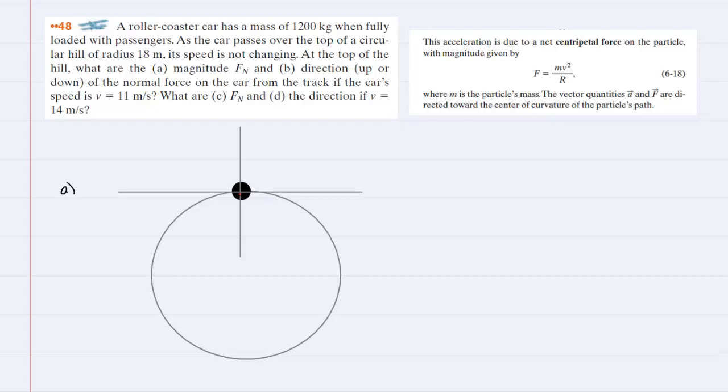We will first draw a free body diagram showing the forces acting on the roller coaster car when it is located at the top of this circular path. We have the downward acting gravitational force, which we can label as mg, and then we have the surface of the track pressing up on the roller coaster car, and we will call that the normal force, F subscript n.